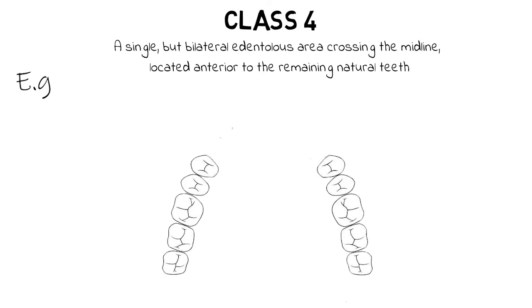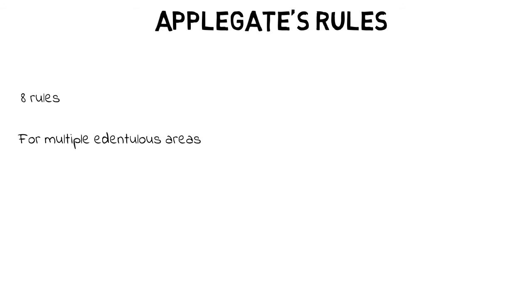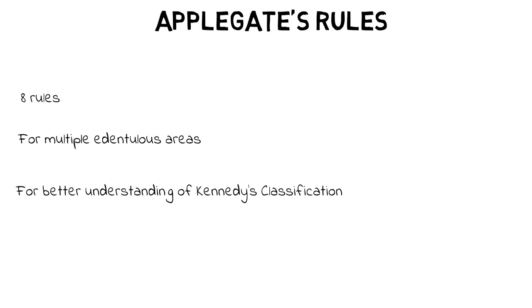Those were the four classes of Kennedy's classification of edentulous states. Next we have Applegate's rules — eight rules in total proposed by Applegate — for helping us classify multiple edentulous areas and for better understanding and application of Kennedy's classification in everyday practice. Let's go through these eight rules.